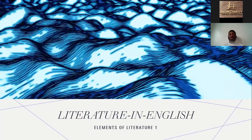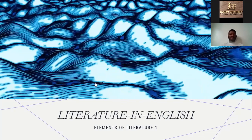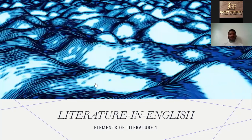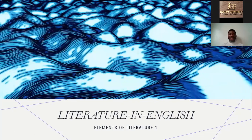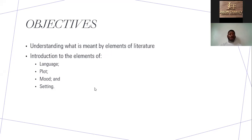This week we are delving into the subject to discuss the elements of literature. Given that this is a broad area, we'll be taking another part next week. Our objectives for today's discussion will be to understand what is meant by elements of literature, and then we'll discuss four of them: language, plot, mood, and setting.